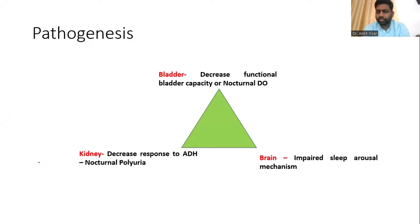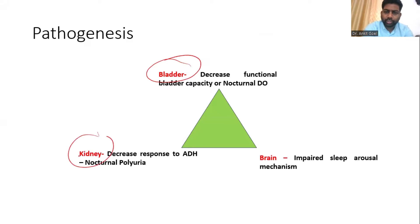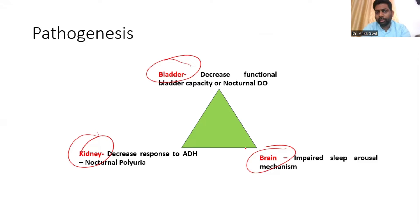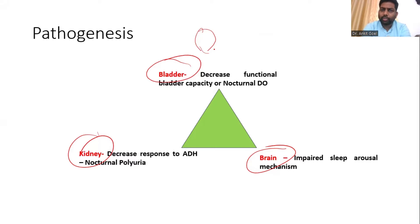The next question was on pathogenesis. Whenever you get a question on nocturnal enuresis, even for MCQs, this has been asked multiple times: what is the pathophysiology behind nocturnal enuresis? You need to bring about three levels — bladder, kidney, and brain. At the level of the bladder, the functional capacity appears to be small — functionally, not anatomically. The bladder is not able to hold urine, or there is a theory suggesting nocturnal detrusor overactivity that doesn't allow the bladder to hold urine during sleep.